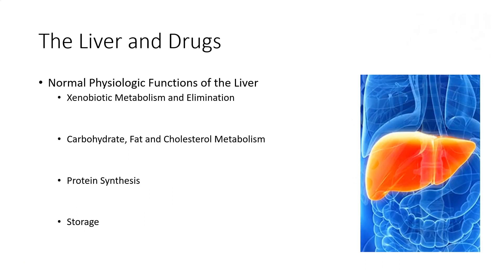We'll also be spending a lot of time on hepatic drug metabolism and factors that affect it. The liver serves a very important role in physiology, including drug metabolism and elimination. Some other functions include carbohydrate, fat, and cholesterol metabolism, the synthesis of proteins — importantly plasma proteins that drugs bind to, such as plasma albumin. Clotting factors are also synthesized in the liver, and the liver serves as a storage site for fat-soluble vitamins, as well as glycogen and other substances.